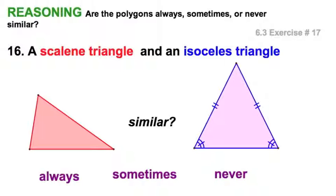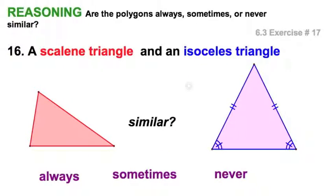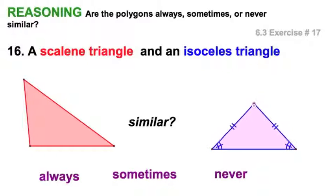Well, how about similarity between these two? I've got scalene, and I've got isosceles here for my red and blue. Well, scalene cannot have two congruent sides. Isosceles must have two. Of course, it could have three, but it must have two congruent sides.